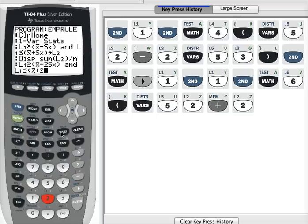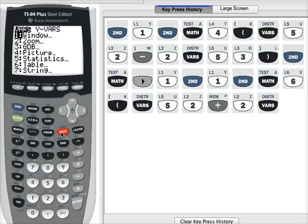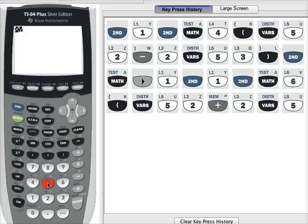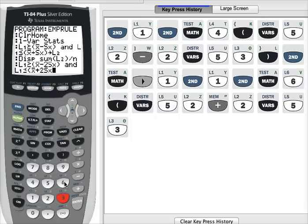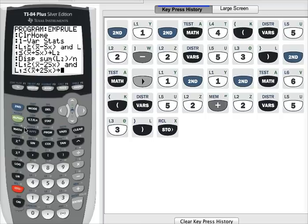So two, under variables, again statistics, option number five, standard deviation is number three. Close my parentheses. Once again I need to store that into list two. So down here between the one and the four, here's the store button. Store, list two, second, two, press enter.